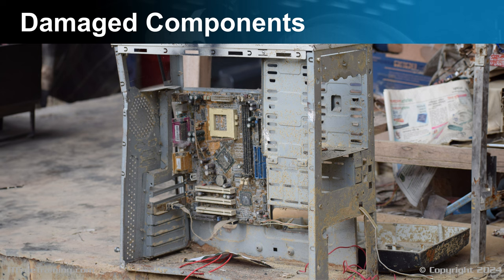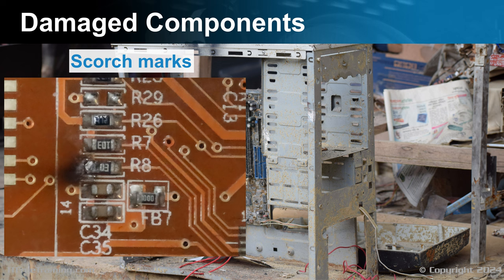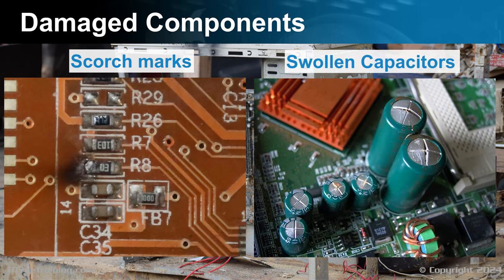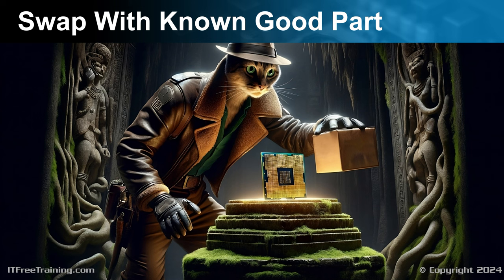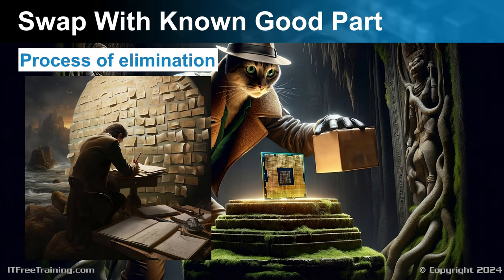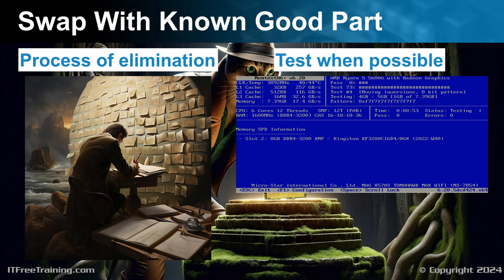If you have damaged components, there may be something visible to show this is the case. In some cases, you may have scorch marks around damaged components or a little bit of black soot, which may be difficult to see. When capacitors fail, they may become swollen or start leaking. In the early 2000s this was a big problem, but nowadays you don't tend to see it so much. If your device is randomly restarting or switching itself off, it may be due to a problem with a capacitor. When troubleshooting, it helps to swap components with known good parts — this helps you determine what is working and what is not, using the process of elimination to find the failed component. Sometimes you won't be able to replace a component with a good part; when this occurs, test each component whenever possible, as the manufacturer may provide tools for testing to help you find the component that has failed.